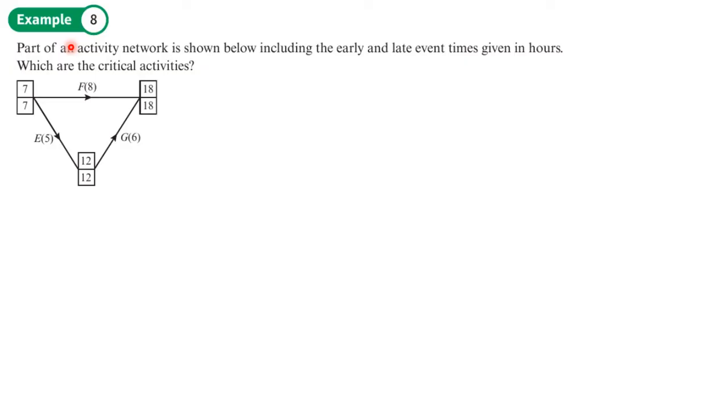Example eight: part of an activity network is shown below, including the early and late event times given in hours, which are the critical activities. Now may be tempted to say that F is critical since it's between two critical events, but seven plus eight is only 15. This will finish before the 18. So F can be delayed by up to three units of time. It won't change the finish time.